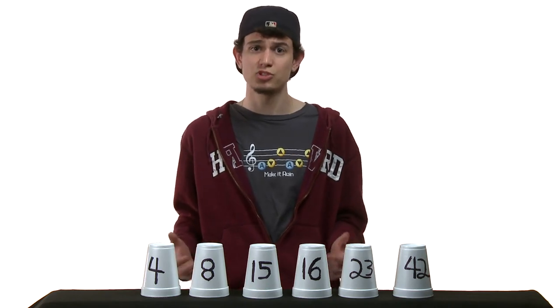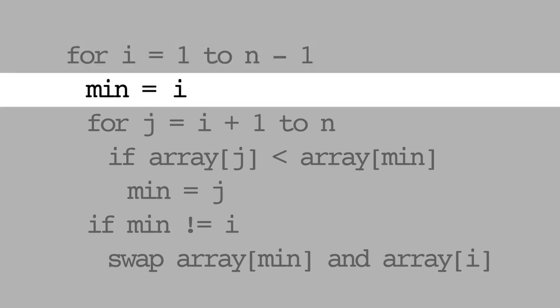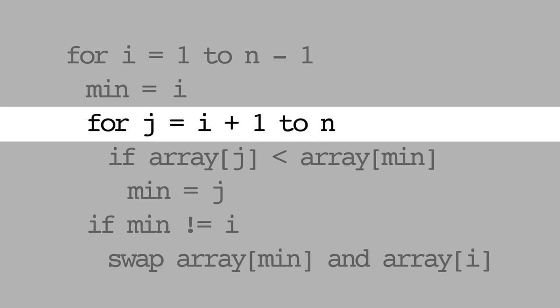Let's now formalize our algorithm with some pseudocode. On line 1, we can see that we need to iterate over every element of the list, except the last element, since a one-element list is already sorted. On line 2, we consider the first element of the unsorted portion of the list to be the minimum, as we did with our example, so we have something to compare to. Line 3 begins a second loop, in which we iterate over each unsorted element. We know that after i iterations, the sorted portion of our list must have i elements in it, since each step sorts one element. So the first unsorted element must be in position i plus 1.